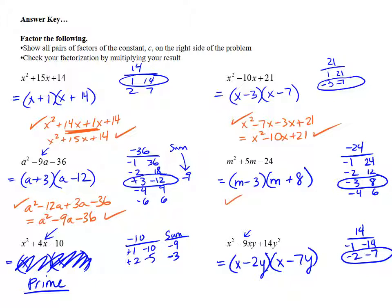Fourth check, m times m is m squared. Outside terms plus 8m. Inside terms minus 3m. Last terms minus 24. Finish collecting like terms. m squared plus 5m minus 24 is exactly where we started. Once again, that checks.